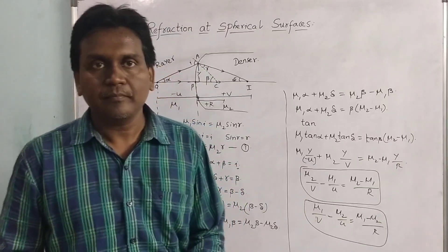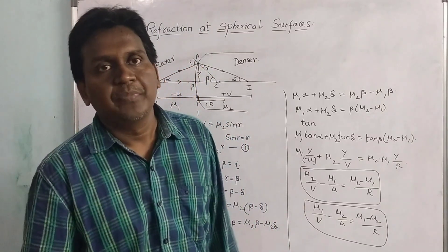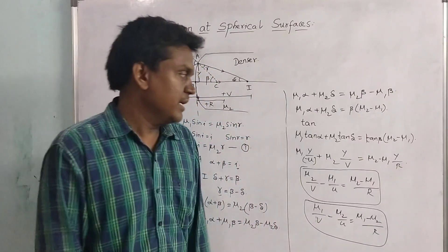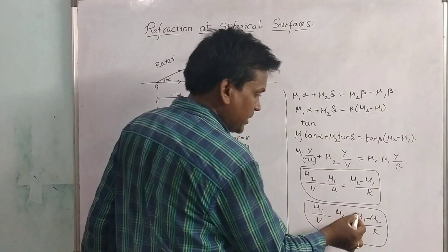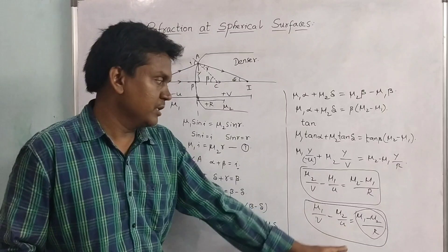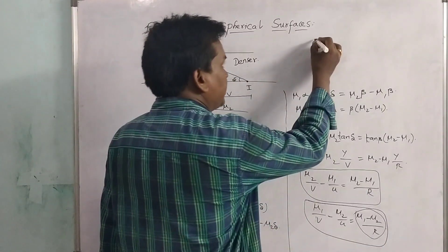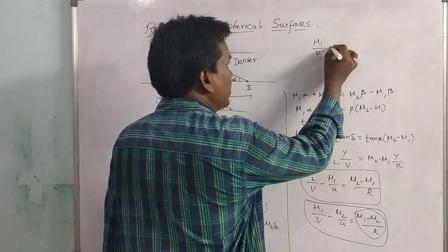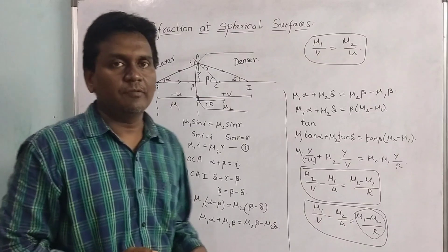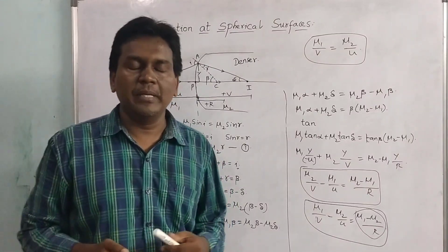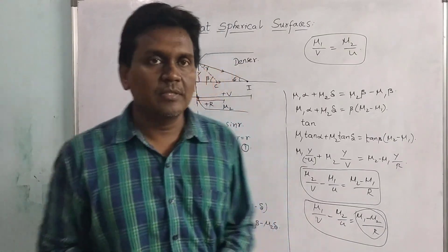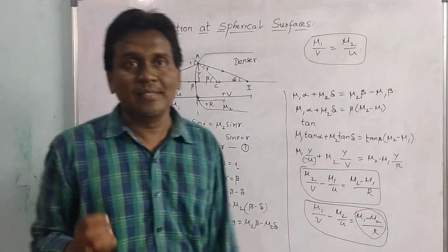For a plane surface, the radius of curvature is infinity. Since anything divided by infinity is zero, the right-hand side term (mu2 − mu1)/R becomes zero. Therefore, for a plane surface we get: mu1/v = mu2/u. This is the simplified equation for refraction at a plane surface. This concludes our discussion on refraction at spherical surfaces.